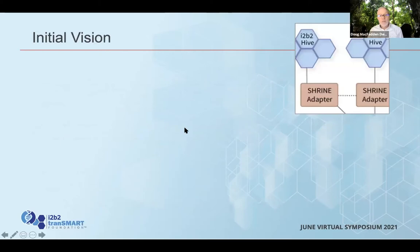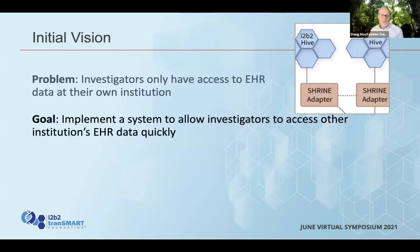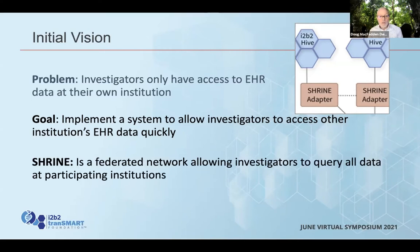Under Zach's guidance, we created an initial vision. The problem was investigators only have access to electronic medical record data at their own institution, and quite often they needed access to information from other sites to create a broad enough cohort, validate information, and so on. The goal was to implement a system that will allow investigators to access other medical record data quickly — and quickly is a key element of this. So we built SHRINE. The work started even before we got our first CTSA award, and it is a federated network that allows investigators at each institution to query all the other institutions' data, in real time, for a highly responsive mode of interaction.